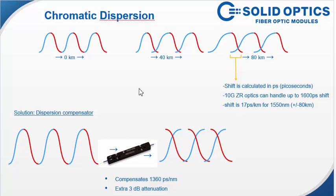If you want to go above 80 kilometers, what you need is a chromatic dispersion compensator which puts a negative chromatic dispersion on the light. Which can be visualized like this.